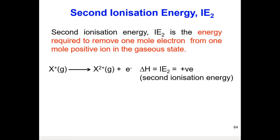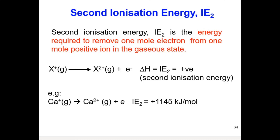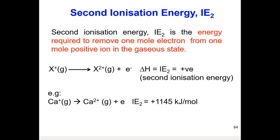Using the same element calcium as before, the second ionization energy for calcium is represented by this equation: one mole of electrons is removed from one mole of calcium ion with charge positive 1. The second ionization energy for calcium is 1,145 kJ per mole.